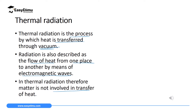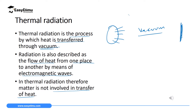Thermal radiation does not involve solids, liquids, or gases to transfer heat from one point to another. So if you have a body with radiant heat and another body where the heat can be transmitted to, and there's a vacuum with no substance in between, this radiation will still reach that body. Where heat reaches a body through a vacuum, we call that thermal radiation.